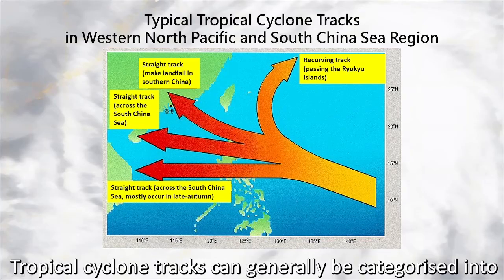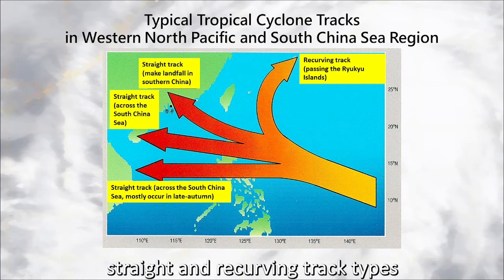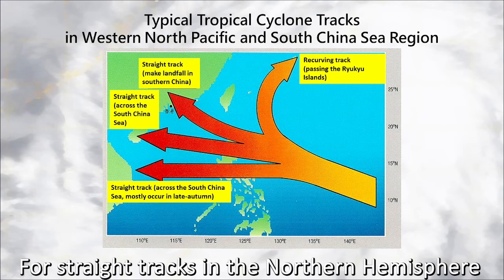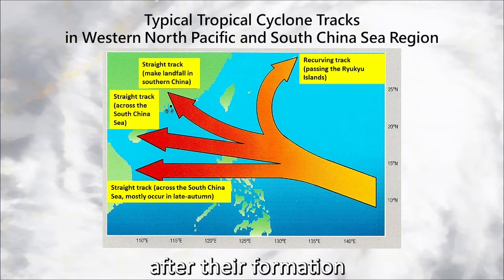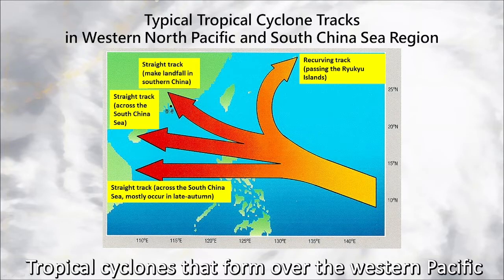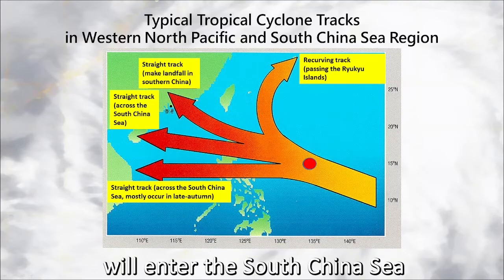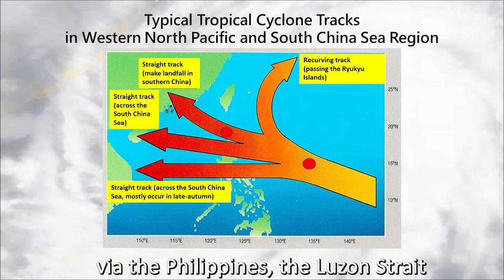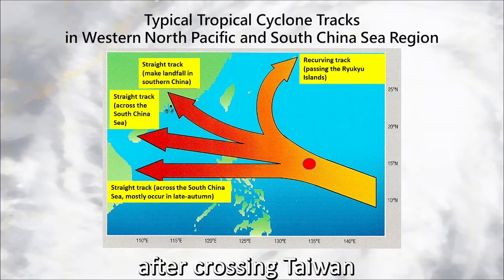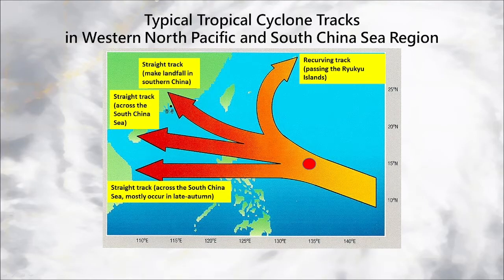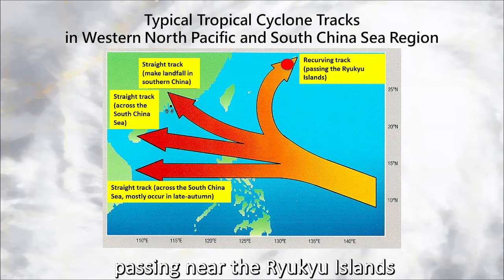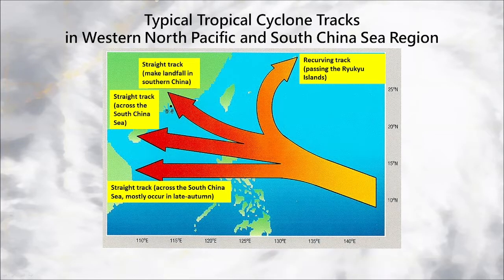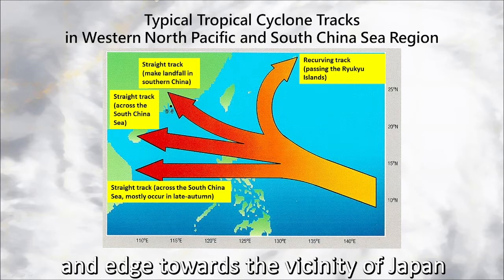Tropical cyclone tracks can generally be categorized into straight and recurving track types. For straight tracks in the northern hemisphere, tropical cyclones normally keep moving west to northwestwards after their formation. Tropical cyclones that form over the western Pacific will enter the South China Sea via the Philippines, the Luzon Strait, or approach the coast of southern China after crossing Taiwan. For recurving tracks, most of them will turn northwards in the seas east of Taiwan, passing near the Ryukyu Islands, then turn northeastwards and edge towards the vicinity of Japan.